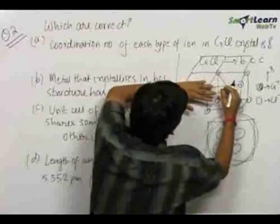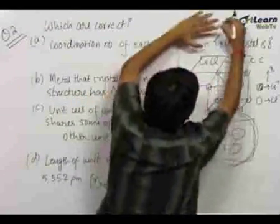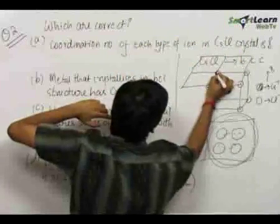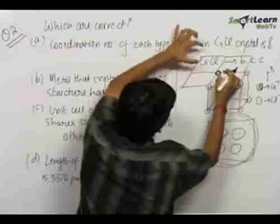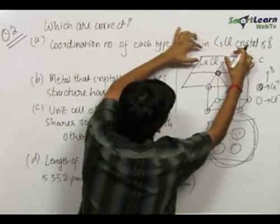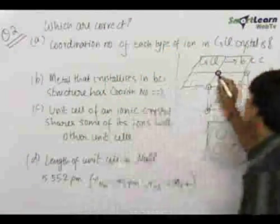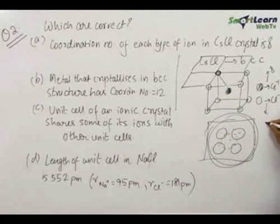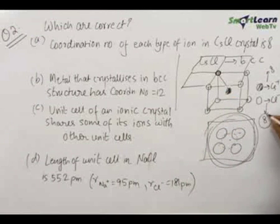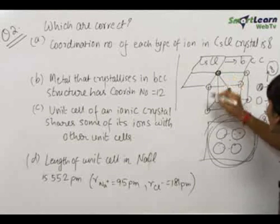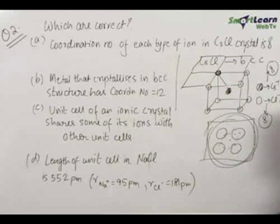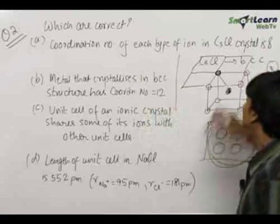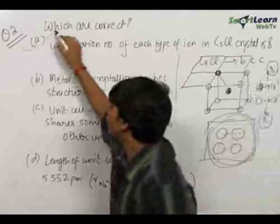Above these four unit cells, there will be another four unit cells which will have this as a corner atom again. Therefore, this Cl⁻ ion will touch four Cs⁺ atoms in the above four unit cells as well. In total, this Cl⁻ ion will touch 8 Cs⁺ ions. Therefore, the coordination number of Cl⁻ is 8 and Cs⁺ is 8, so the coordination number of each type of ion in CsCl crystal being 8 is a true statement.